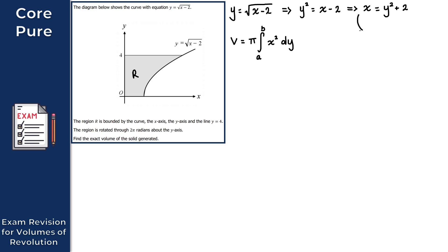Now we square both sides to get x squared as required for our integrand. Expanding the double brackets: y squared times y squared gives y to the 4, then 2y squared plus another 2y squared gives 4y squared, and 2 times 2 gives plus 4. So x squared equals y to the 4 plus 4y squared plus 4.